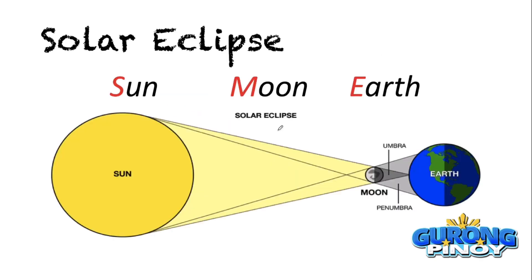For the solar eclipse, we use the mnemonic SME — sun, moon, and earth. This means the moon is between the sun and the earth. A common LET question would ask: what type of eclipse occurs if the moon falls between the sun and the earth? Since the alignment is sun, moon, earth — that's SME — your answer would be solar eclipse.